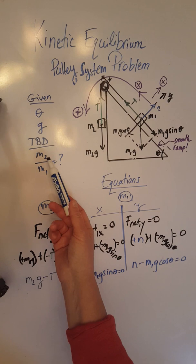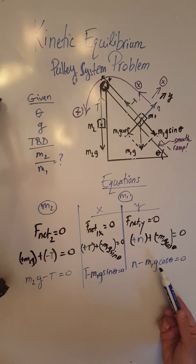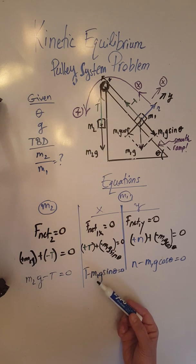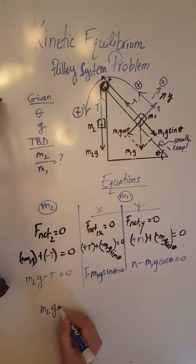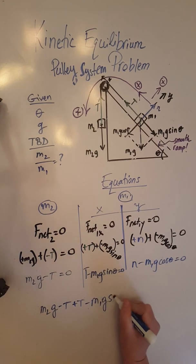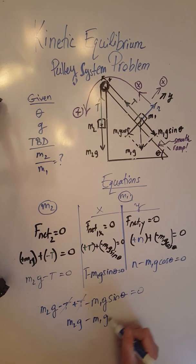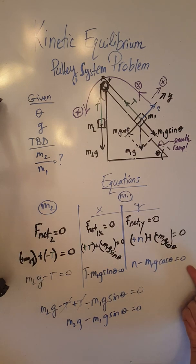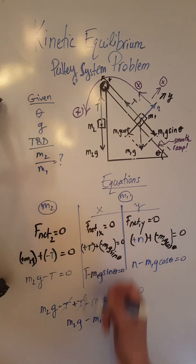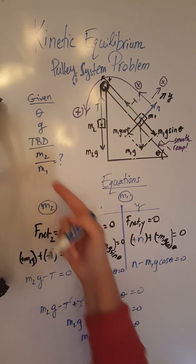We need to calculate the ratio M2 over M1. M2 appears in the first equation and M1 appears in the second. To eliminate tension, I add the first two equations: M2g minus T plus T minus M1g sin theta equals 0. T and minus T cancel out, leaving M2g minus M1g sin theta equals 0. Everything in this equation is given except M2 and M1, so I rearrange to get M2g equals M1g sin theta.